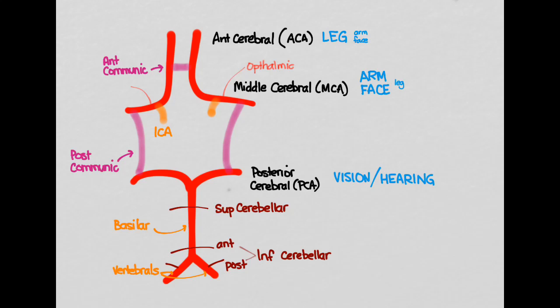But for the sake of this video, the main things you want to know are the ACA gives you mostly leg, and the MCA gives you arm and face. And remember, it's going to be on the opposite side, the contralateral side of the stroke that you're going to have symptoms in the body.